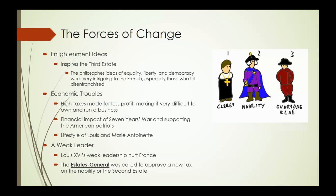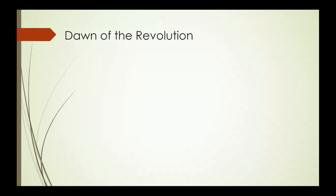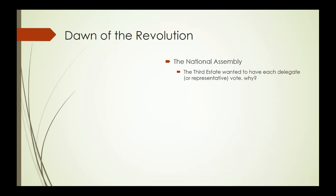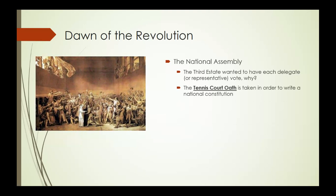The Estates General is called in 1789. The king needs to call it in the hopes that they will approve a new tax on the nobility because he needs revenue. Not surprisingly, the first two estates — the clergy and the nobility — say no, and they have two of the three votes. So now we have a crisis, and this crisis is going to lead to a really extraordinary event in European history: the Tennis Court Oath and the founding of the National Assembly.